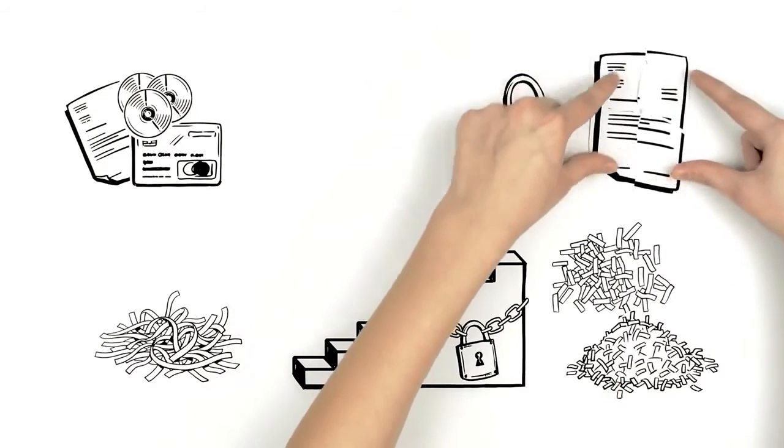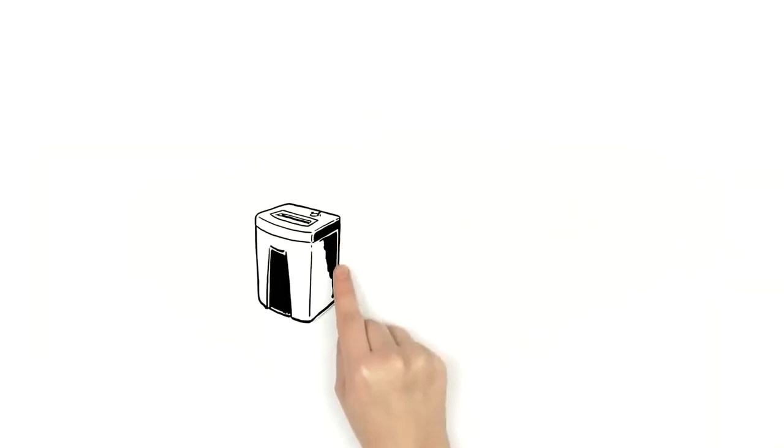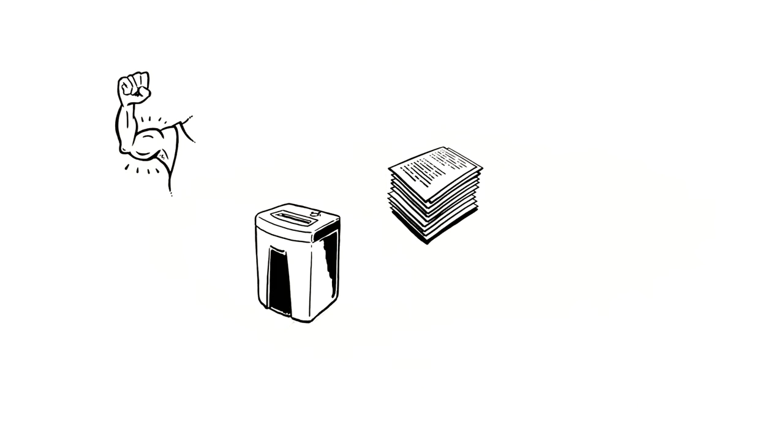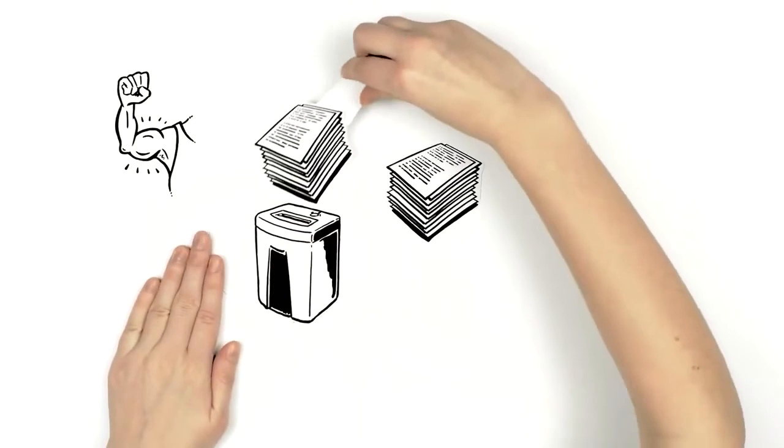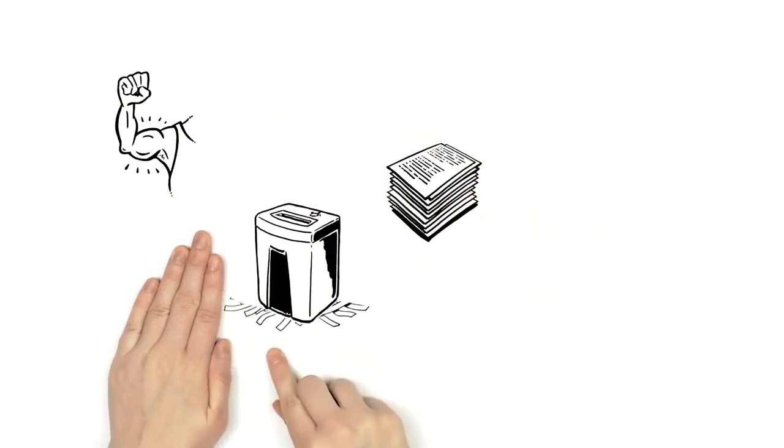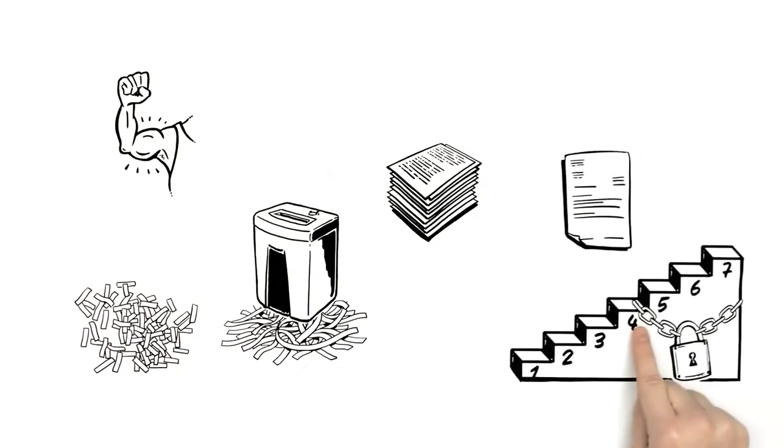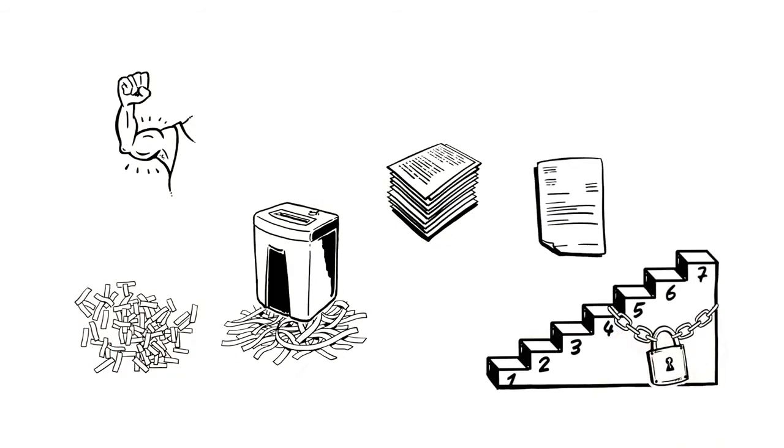Each document shredder, based on the strength of its motor and cutting assembly, has its own cutting capacity that determines how many sheets of A4 or letter-sized paper the document shredder can cut at once. The throughput depends on the particle size. If you need a medium security level but would also like to cut 20 sheets at a time, you need a higher-end, more powerful shredder.